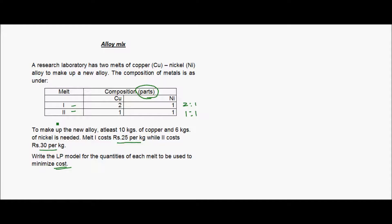In this example we have been given two alloys — one and two — each composed of a certain ratio of copper and nickel. The research lab wants to use both these alloys to create another alloy, let's call it alloy number three.